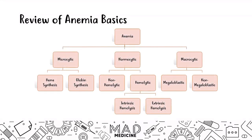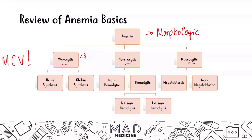To review overall — classifying off the morphologic approach — in anemia you can have microcytic, normocytic, or macrocytic anemia based off of the MCV. If MCV is less than 80, you have microcytic anemia, which breaks down into defective heme synthesis or defective globin chain synthesis. MCV of 80 to 100 is normocytic anemia, where you're either dealing with non-hemolytic or hemolytic anemia; in hemolytic you can have intrinsic causes within the cell or extrinsic causes outside the cell. MCV greater than 100 is macrocytic, presenting with megaloblastic — nuclear deficits — or non-megaloblastic anemias.